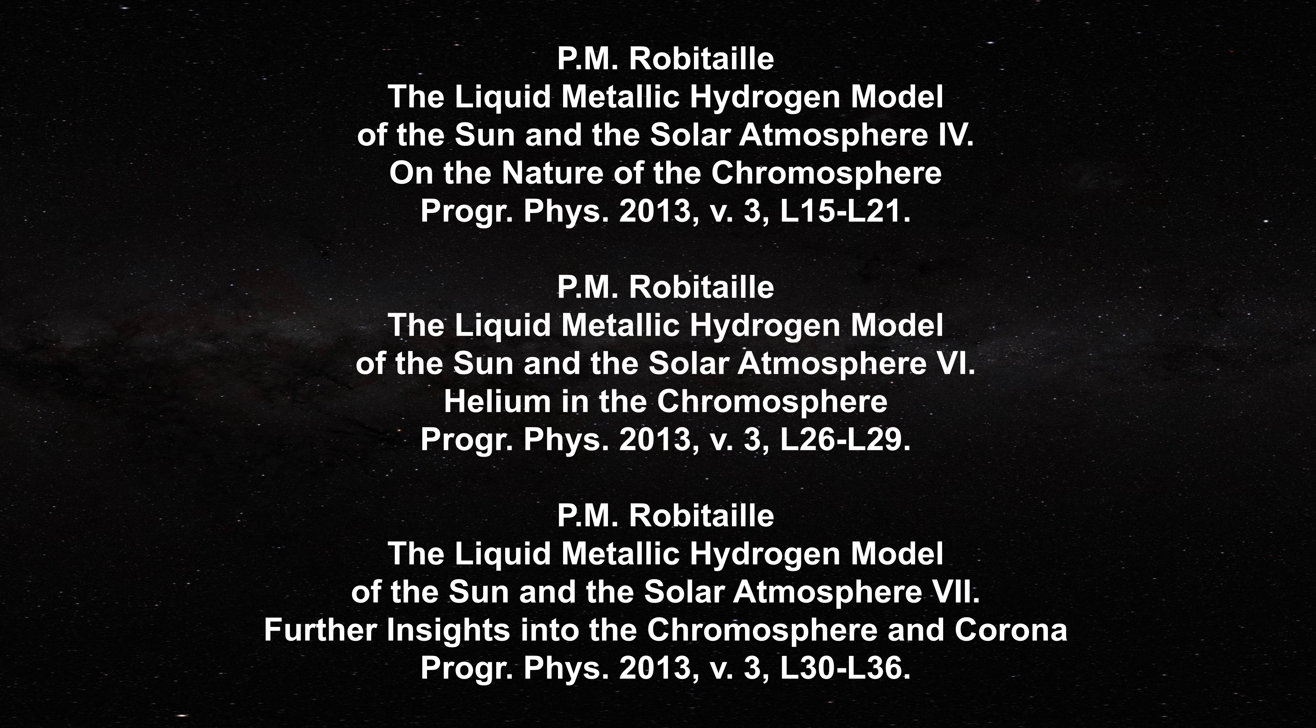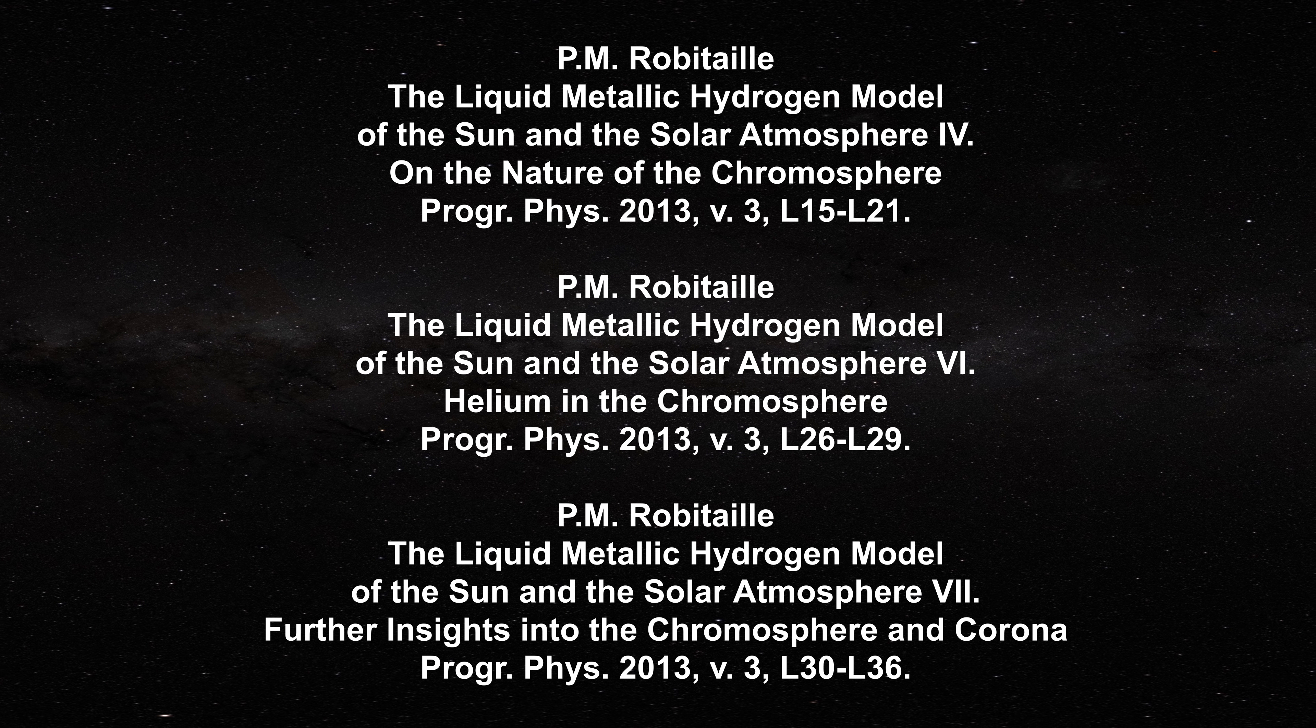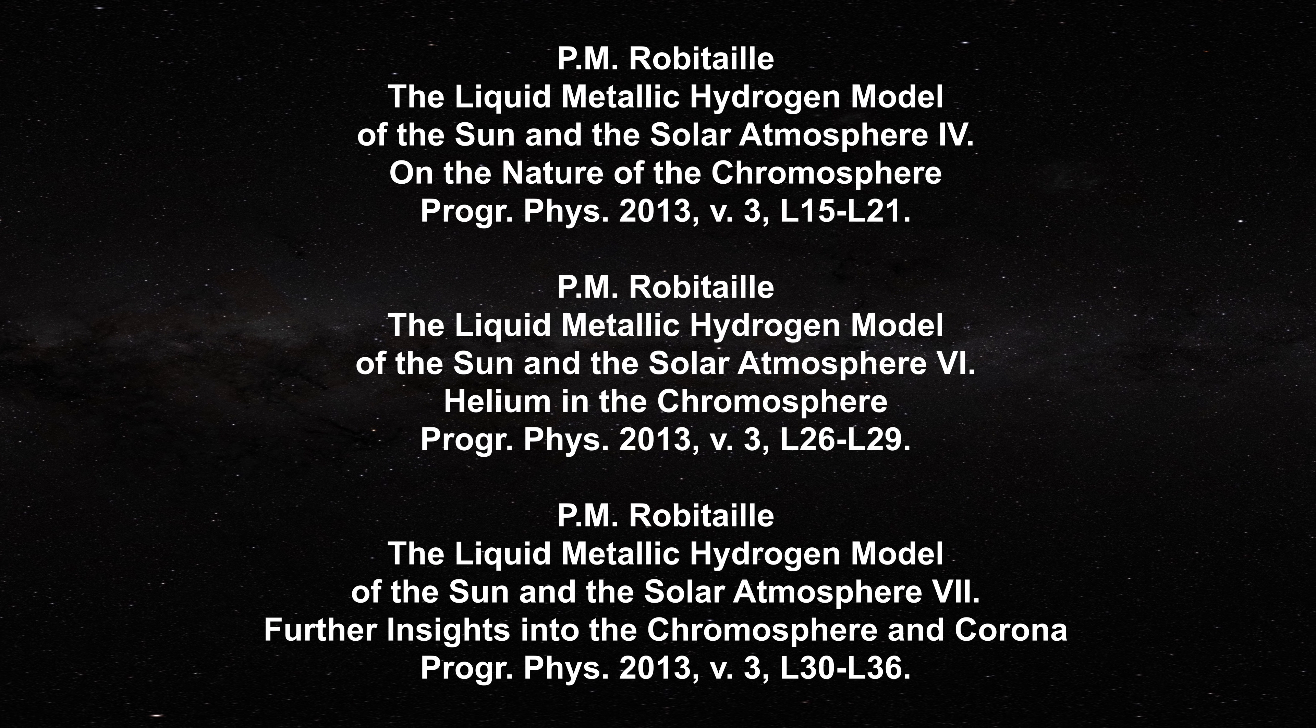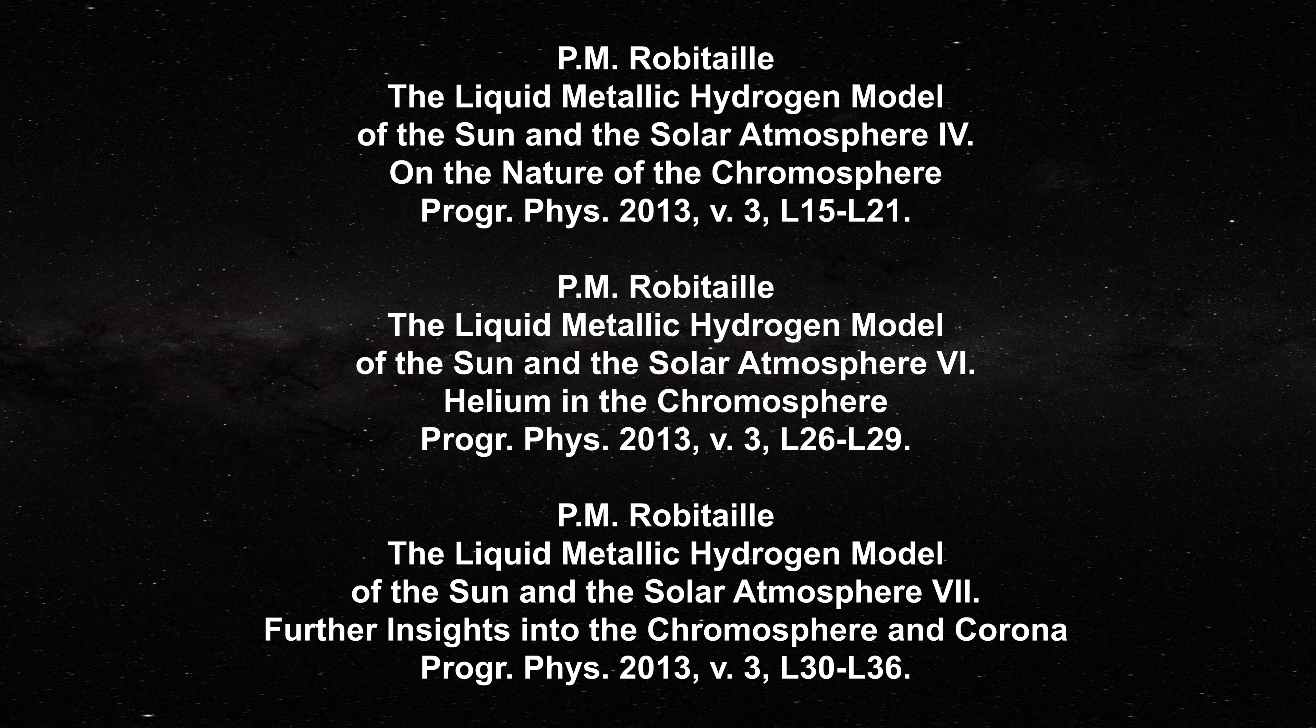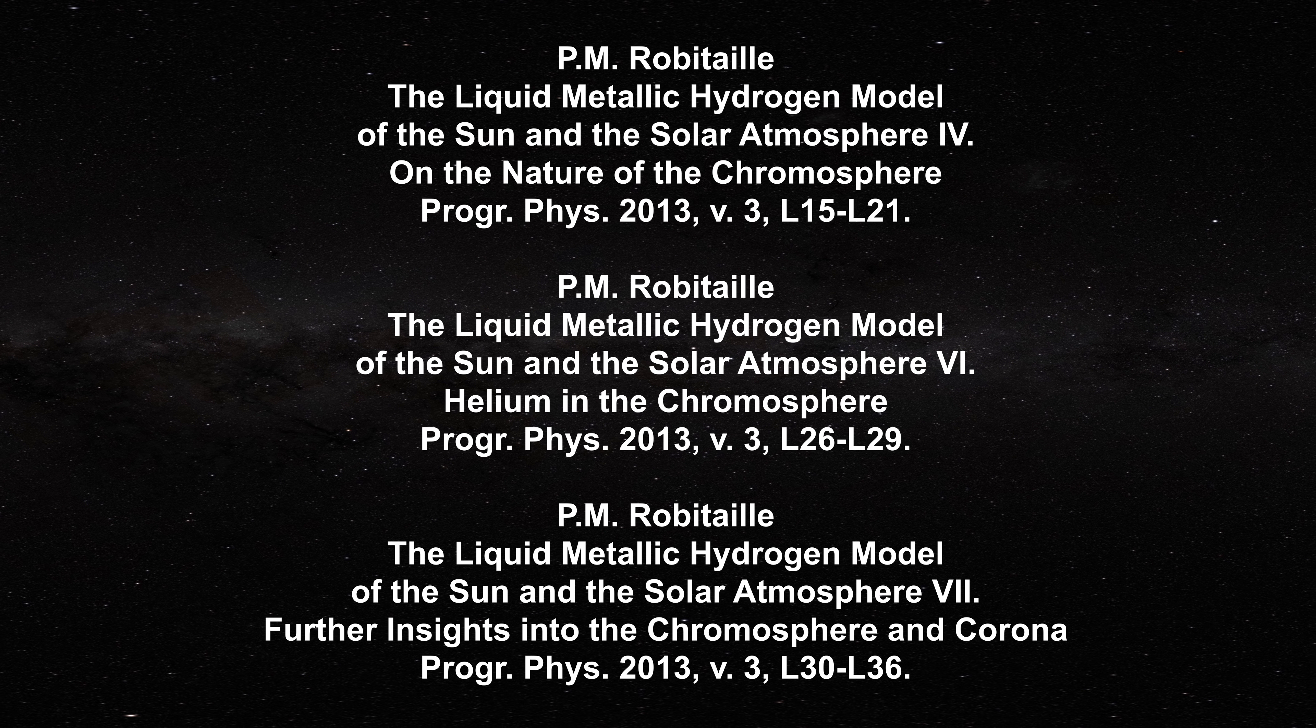The region plays a critical role in the metallic hydrogen model as the site of hydrogen recondensation. It is the presence of emission lines in the chromosphere that leads to this conclusion. This topic has been described in detail in these papers and will be addressed in future videos. The important point for now is that in this model the chromosphere has a real function. This is a central difference relative to the random nature advanced for this region in the standard solar model.